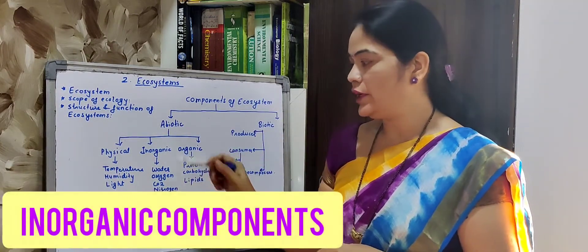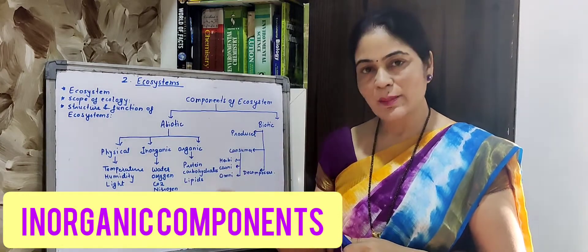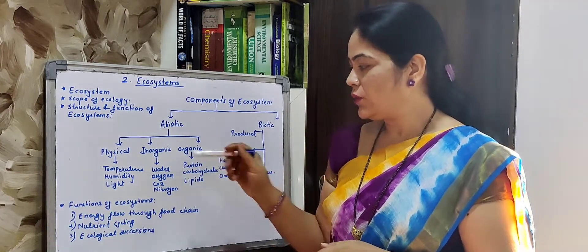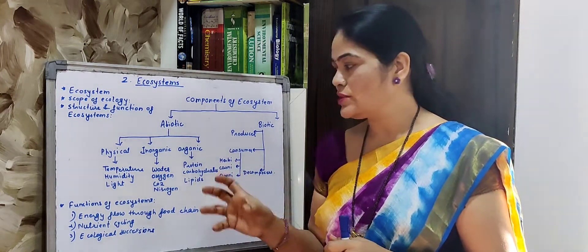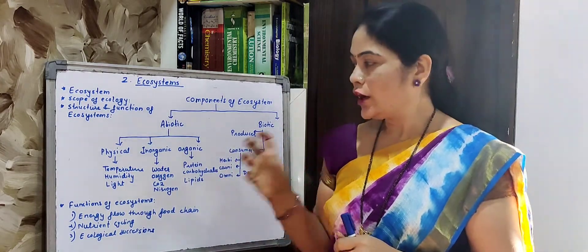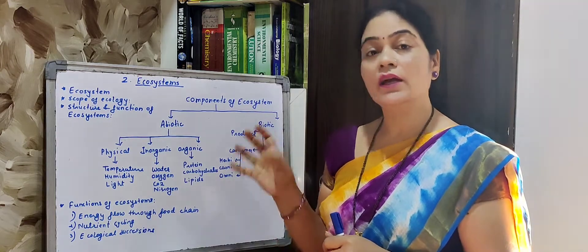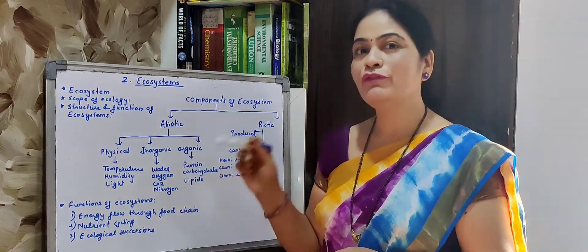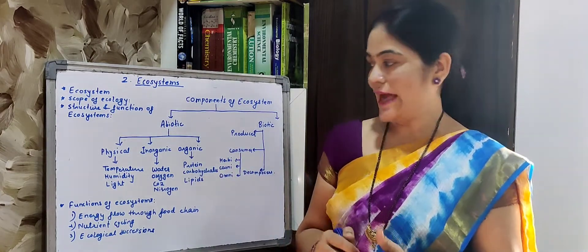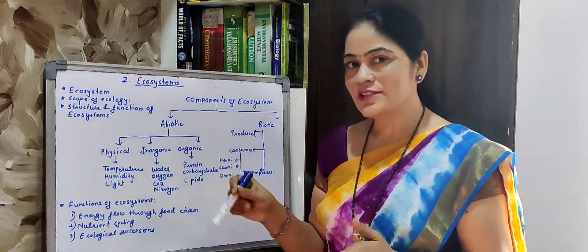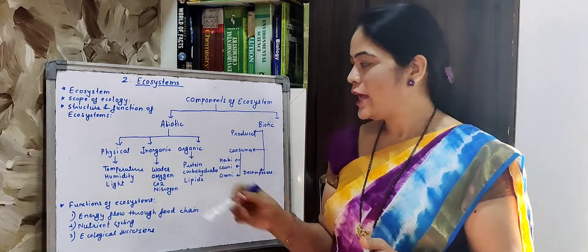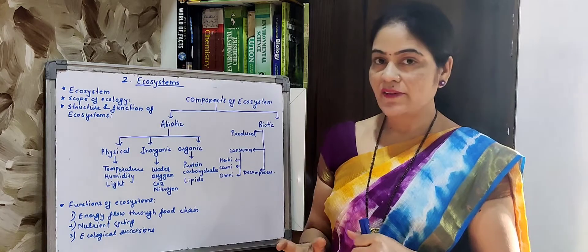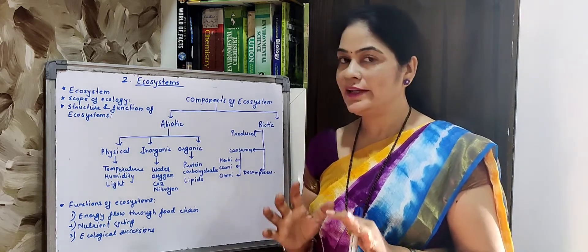Then inorganic components. In inorganic components, soil comes first — the nutrients present in the soil. Then water, oxygen, carbon dioxide, and nitrogen — all are inorganic components. These are also important components for the growth and survival of plants as well as animals. Without water and oxygen we cannot survive — these are very important inorganic components essential for the survival of every individual.